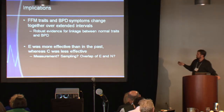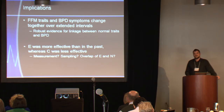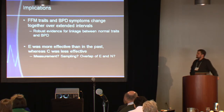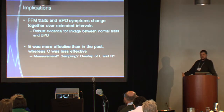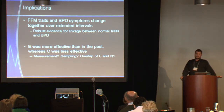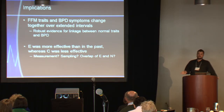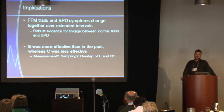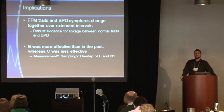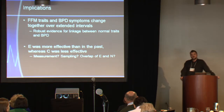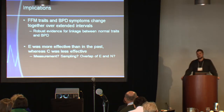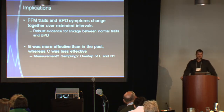Five-factor traits and borderline personality disorder symptoms seem to be changing together over time over extended intervals. At this point, it's safe to conclude that there's robust evidence that five-factor traits and borderline personality disorder symptoms relate to one another. We might have different interpretations about what that means exactly, but to say that traits are somehow not relevant or important for understanding personality disorder just doesn't seem consistent with the evidence.